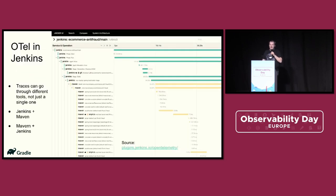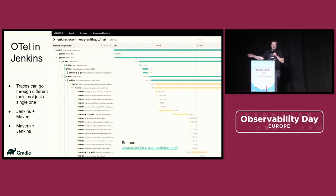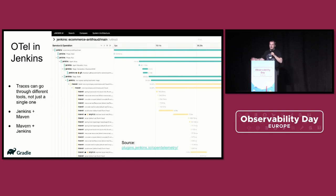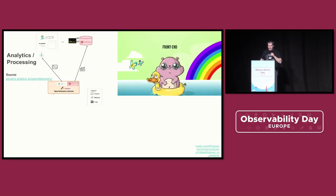In Jenkins, we actually invested quite a lot in OpenTelemetry. We have integration that allows you to investigate not just Jenkins and its agents, but also infrastructure provisioning, Kubernetes, and tools underneath like Maven or Gradle that get invoked and become part of the same traces. So you get all the insights, including test execution for your projects.